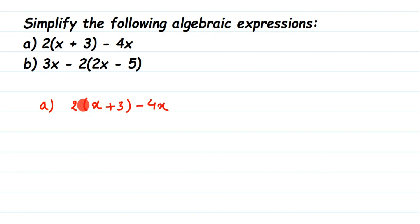So 2 into (x + 3), you have to multiply 2 with the whole bracket. When you open the bracket, 2 into x will be 2x plus 2 into 3 is 6, and minus 4x.